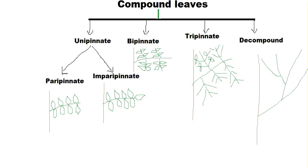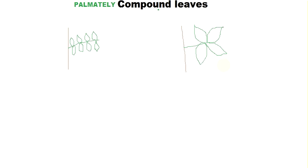The tripinnate type of compound leaf has examples such as Moringa, commonly called drumstick, and Melia azedarach. For decompound leaves, one of the most common examples is coriander, as mentioned at the start of the video. More examples include carrot and fennel — fennel seeds aid in digestion. Another example is Parthenium, a type of grass.